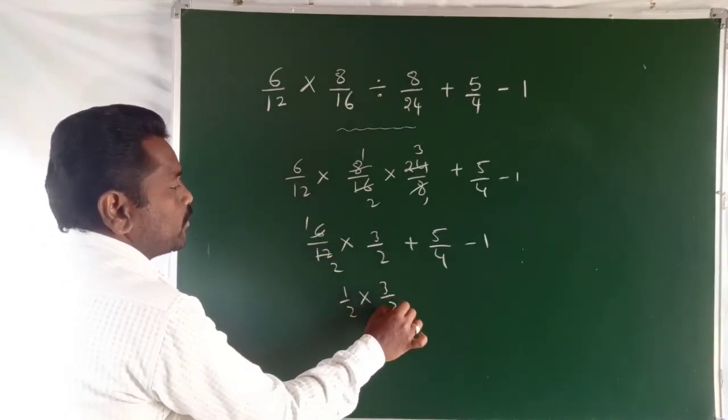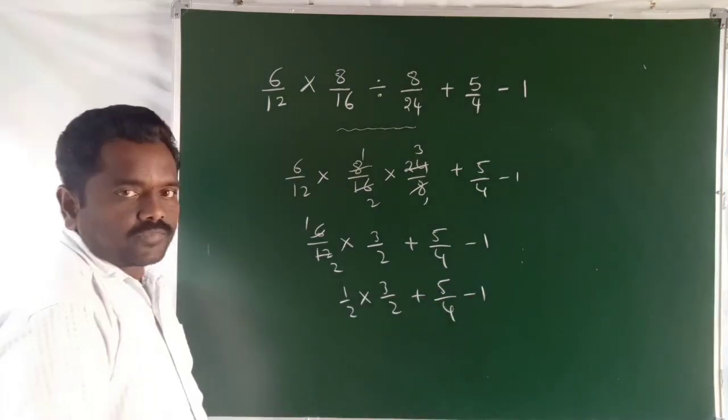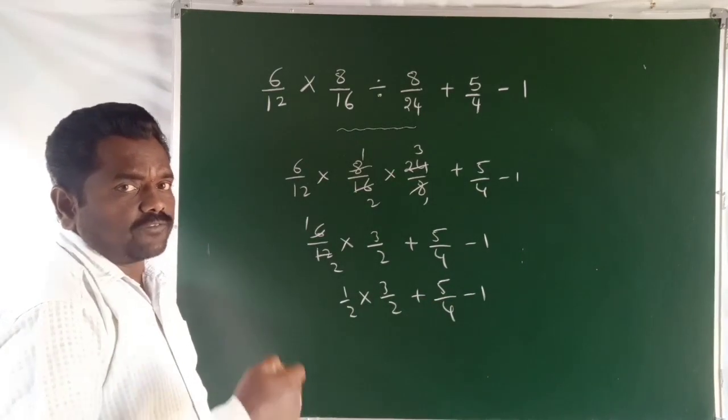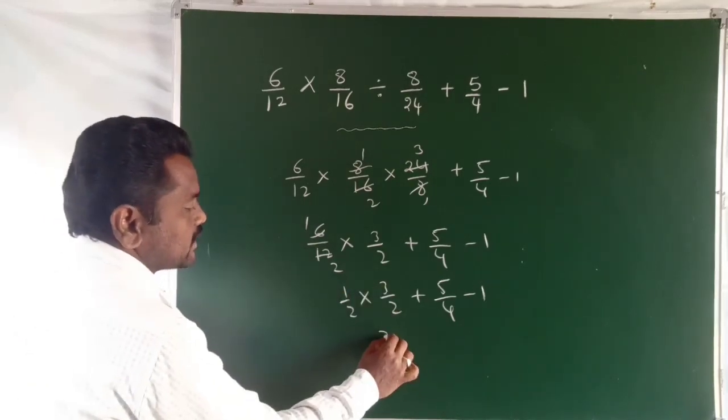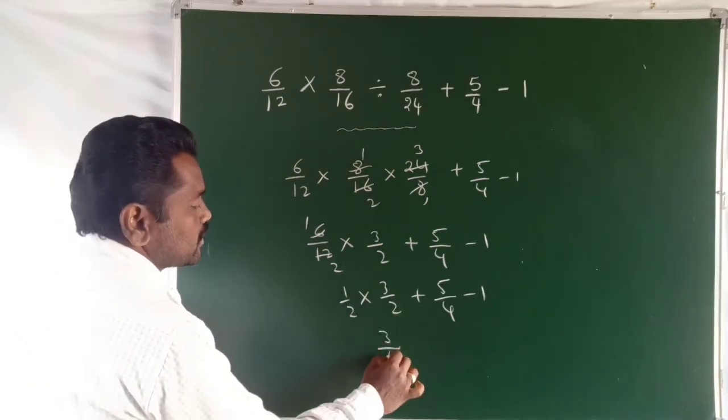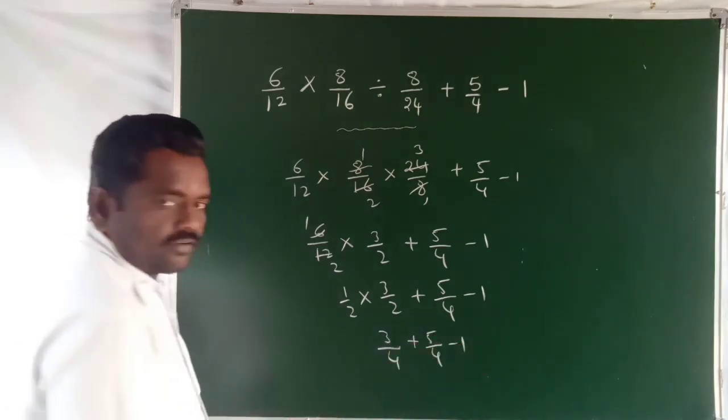Division, after that multiplication. That's why 3 times 1 is 3 by 2 times 4, plus 5 by 4 minus 1.